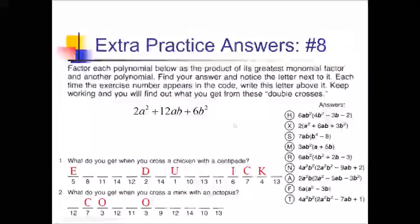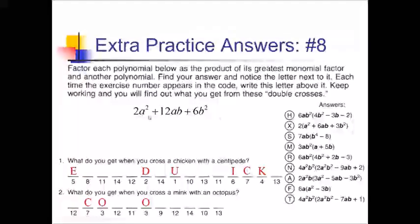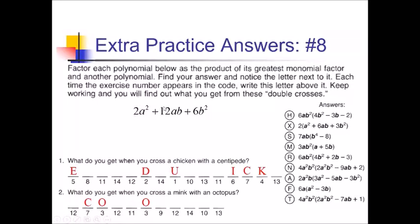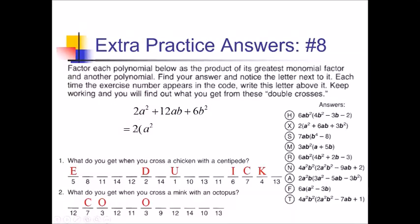Now we're on number 8 — the first in the new set of problems. Over here on the answers, we've got a new set of answers to go with these problems. These problems all have multiple variables, making things a little trickier. Looking at 2, 12, and 6, I can take a 2 out of all of those. We don't have an A or a B in all three terms, so I can only take out that 2. Dividing through gives A squared, plus 6B, plus 3B squared — that's letter X, going in spot number 8.